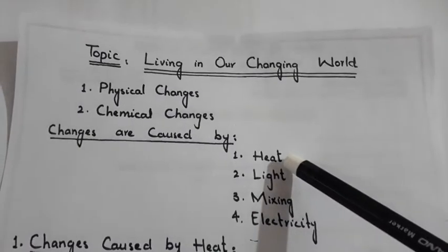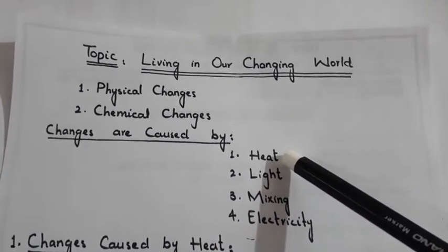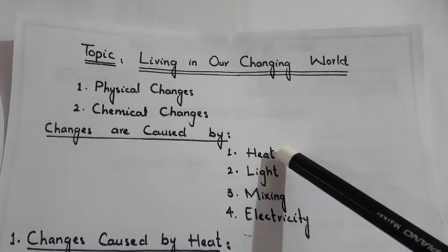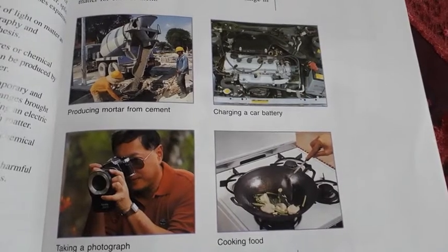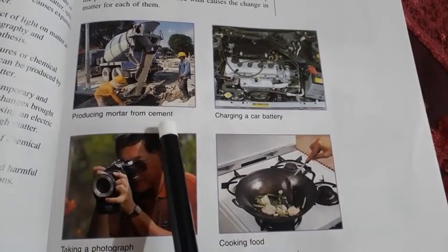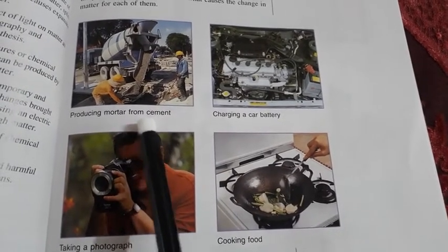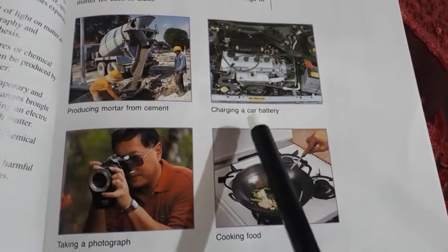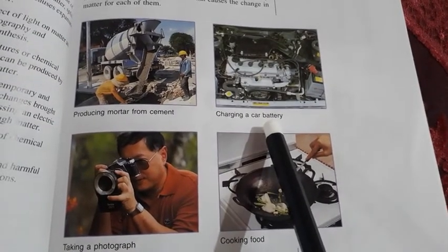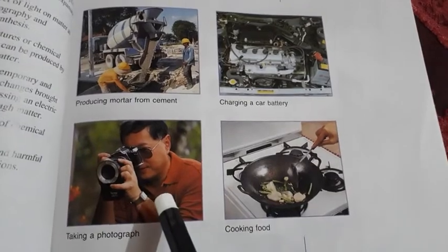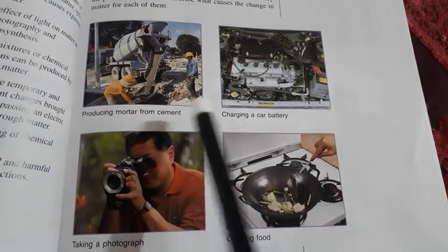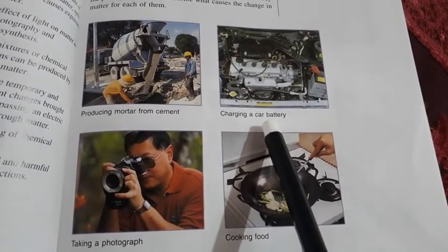First of all I will tell you about the changes caused by heat, but before moving to that topic I will show you some diagrams. In the first diagram you can see the change where mortar is produced from cement — when cement is mixed with water and sand it converts into mortar. Next, charging a car battery is a chemical change caused by electricity.